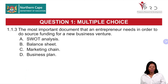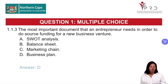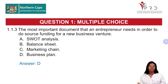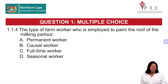Question 1.1.3: The most important document that an entrepreneur needs in order to source funding for a new business venture — the answer is D, which is the business plan. The business plan is the only document used to source funding or to apply for a loan from a financial institution.